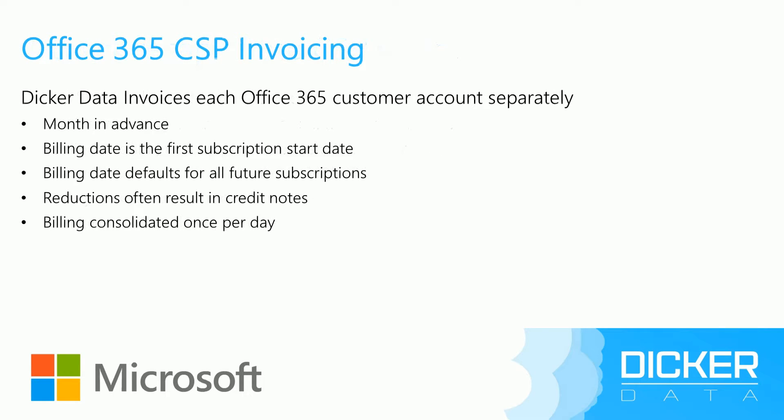A quick recap on the Office 365 CSP invoicing: Dicker Data invoices each of these Office 365 accounts separately, one month in advance. By default, the billing date is always the first day that you set up the first subscription for your customers, and that default billing date will then be the same for all of that customer's future CSP subscriptions. Should the CSP subscriptions be changed, reduced or suspended, a credit note will be raised by the Dicker Data system for the unused portion of that subscription. All invoices are then processed at the end of the day, even if you make multiple changes to your customer throughout that day.